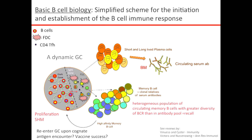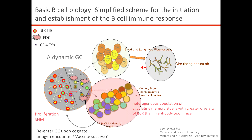Those circulating memory B cells, if they re-encounter an antigen, can return to a dynamic germinal center. There is work by Gabrielle Vittorio showing that a germinal center can persist long enough that a B cell can go out, re-encounter antigen, and come back to the same germinal center. Today I'm really going to talk about memory B cells; I'm not really going to talk about plasma cells, though I have some nice data about antibodies we found in the context of influenza.